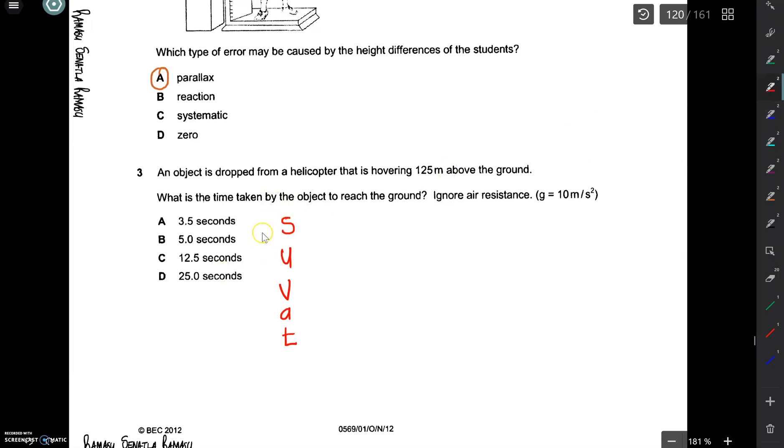SUVAT. Where S is your displacement, U is your initial velocity, V is final velocity, your A is acceleration, and T is time. So our displacement here is 125 meters. Our initial velocity because they tell us that the object is dropped, so this means that its initial velocity was zero. Its final velocity we do not really care about. Its acceleration is 10 because they tell us to ignore air resistance here. So this means that the object has a constant acceleration of 10 meters per second squared. And the time is what we are looking for.